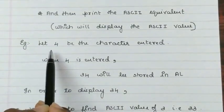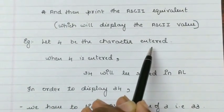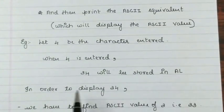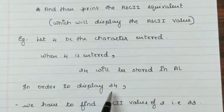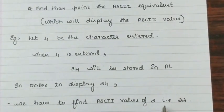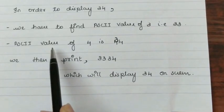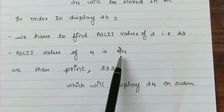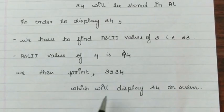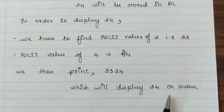Example, let 4 be the character entered. When 4 is entered, 34h will be stored in al. In order to display 34, we have to find ASCII value of 3 i.e. 33h. ASCII value of 4 is 34h. We then print 33 and 34 which will display 34 on screen.